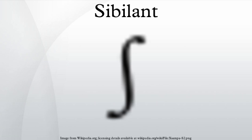Sibilants have a characteristically intense sound, which accounts for their non-linguistic use in getting one's attention. In the alveolar hissing sibilants, s and z, the back of the tongue forms a narrow channel to focus the stream of air more intensely, resulting in a high pitch.